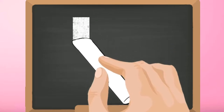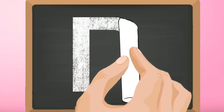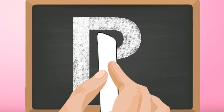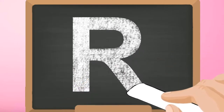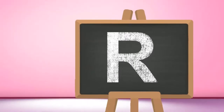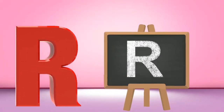Start from the top and draw a standing line down. Go again to the top and draw a curve till the middle, then draw a slanting line to the bottom. Capital R.